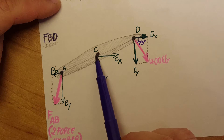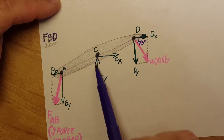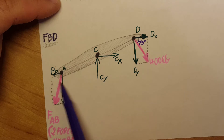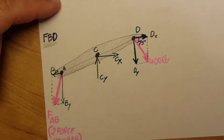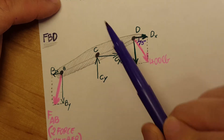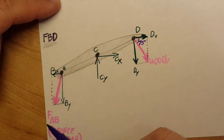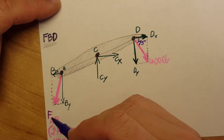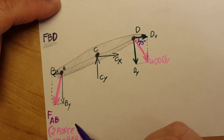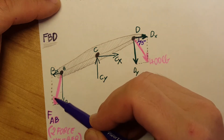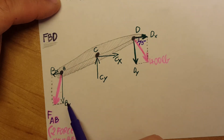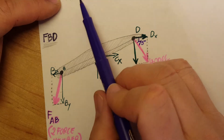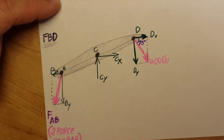At point C we have a pin, so therefore we're going to have components CX and CY. At point B, we notice that member AB is a two-force member. Therefore we know that force FAB will be directed exactly along its length. We can draw it with confidence in that direction, and we'll also be able to break it up into components BX and BY, since we know the distances given on the initial diagram.